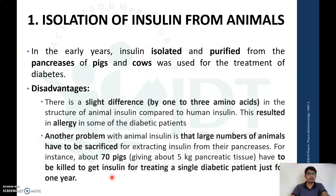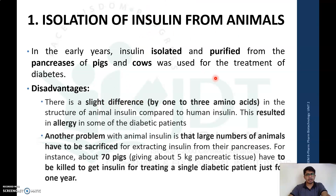This difference may cause severe allergic reactions in some diabetic patients. Another problem is that production of animal insulin requires a large number of animals to be sacrificed. For example, for the treatment of a single diabetic patient for one year, about 70 pigs have to be sacrificed.